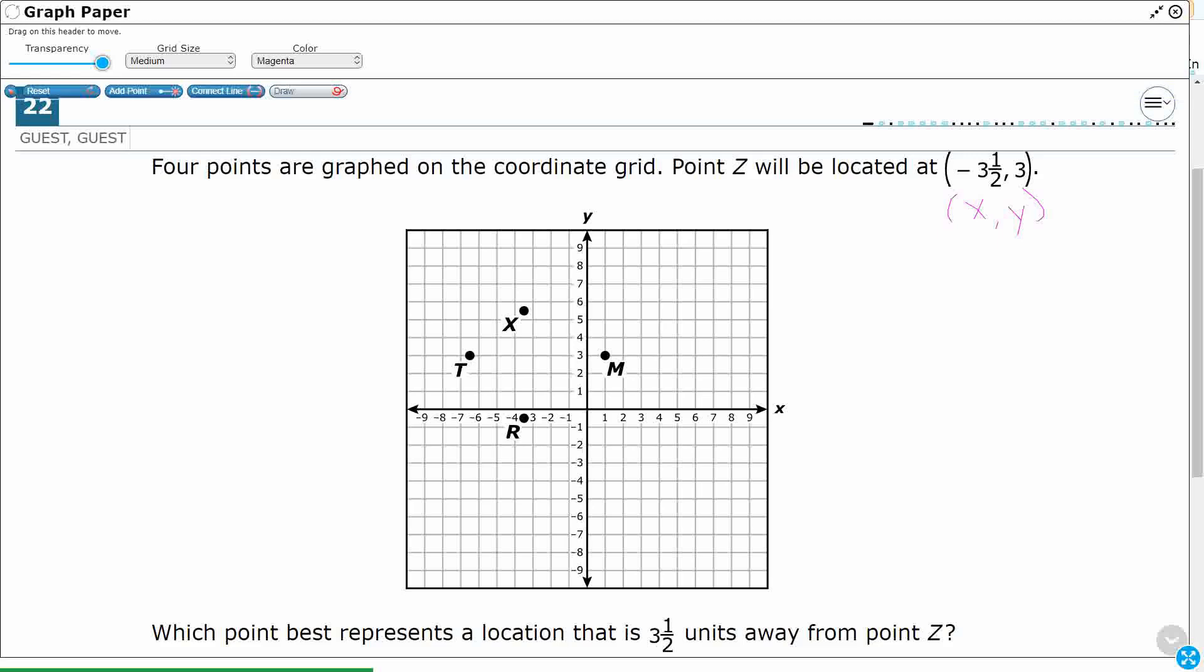Right? So we're going to start at the origin, and we're going to move over negative 3.5. And then we're going to move up 3 from the x-axis: 1, 2, 3. Okay, so right there is my point Z.